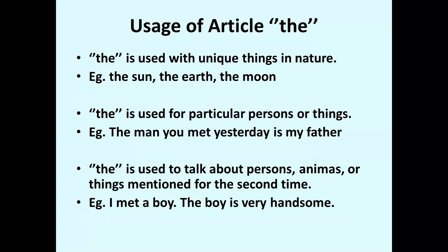Uses of article 'the'. The is used with unique things in nature — for example, the sun, the earth, the moon. The is also used for a particular person or thing — for example, 'the man you met yesterday is my father', so we are referring to a specific person. The article is also used to talk about persons, animals, or things mentioned for the second time. For example, 'I met a boy' — and again we say 'the boy is very handsome', not repeating 'a boy'.